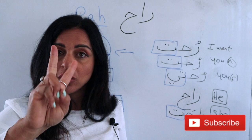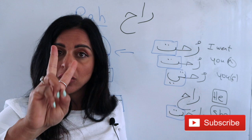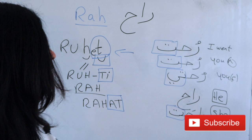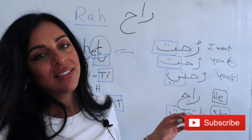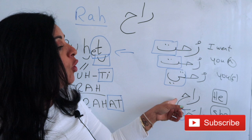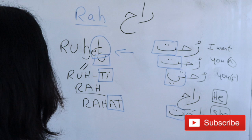We have three more conjugations: 'we went,' 'you all went,' and 'they all went.' Let me recap before erasing the board. Ana rohit — I went. Ente rohit — you male went. Enti rohti — you female went. Huwe raah — he went. Hiya raahat — she went.